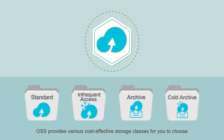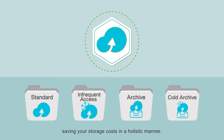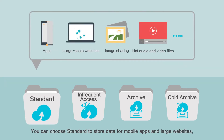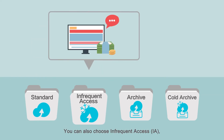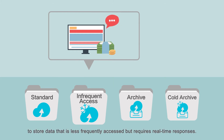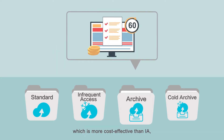OSS provides various cost-effective storage classes for you to choose from based on a wide range of scenarios, saving your storage costs in a holistic manner. You can choose Standard to store data for mobile apps and large websites, store image objects, and store frequently accessed audio and video objects. You can also choose Infrequent Access, which is more cost effective, to store data that is less frequently accessed but requires real-time responses.